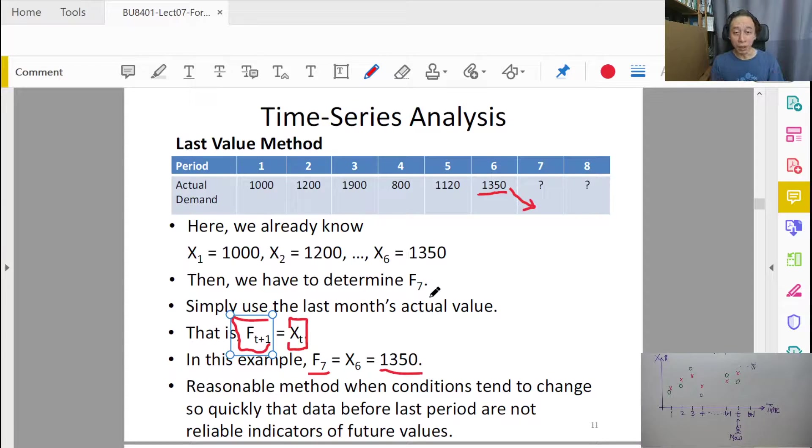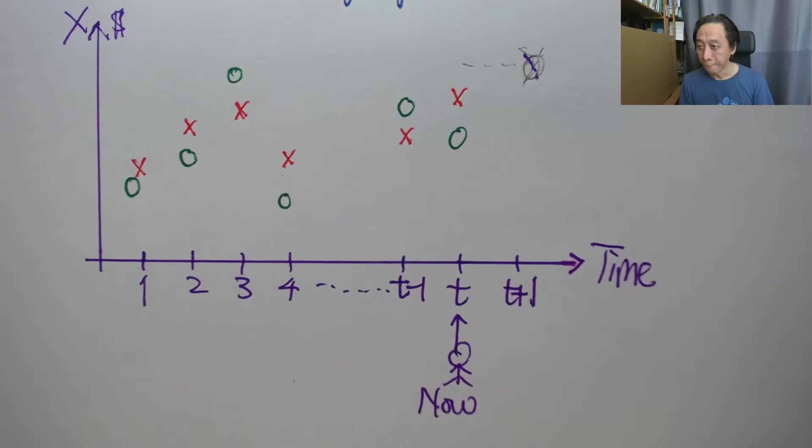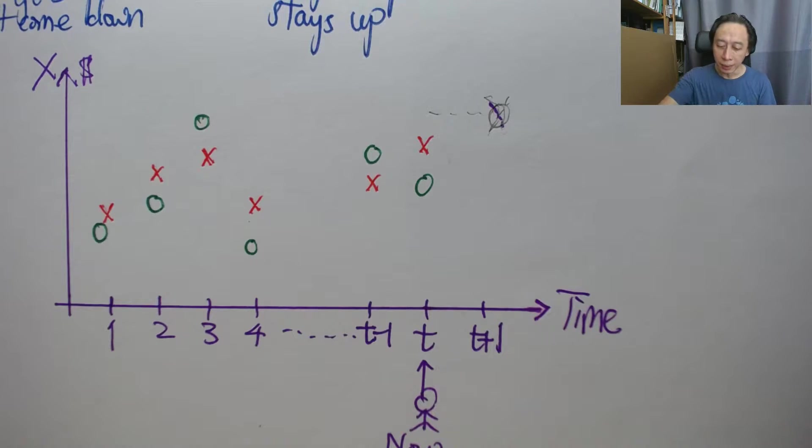In terms of calculation, very simple. Let's look at the diagram here. So what is forecasting method? Very simple. What it says is,